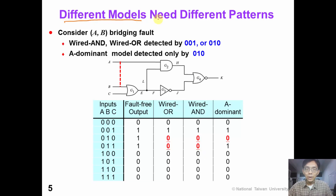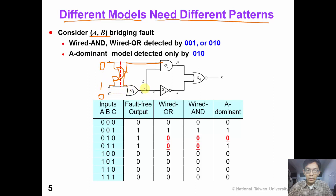For these three different fault models, we will need different test patterns to detect them. Consider an A-B bridging fault modeled as a wire-OR fault model — we insert an imaginary wire-OR gate. When we apply the pattern 0, 1, 0, the output E would be 1, and through the circuit H is 1, J is 0. So the faulty output would be 0, which is different from the good output. In this way, we can detect the fault by pattern 0, 1, 0, or also by 0, 1, 1.